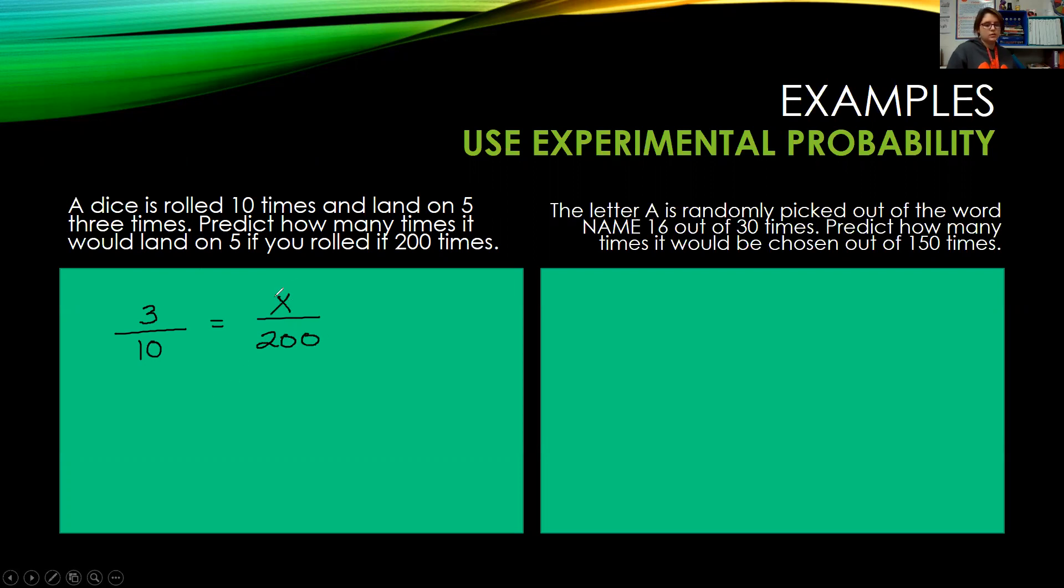And we want to know how many times it would land on 5 based on our smaller test. So again, this is a proportion. So we're going to cross multiply. So we have 10x equals 600, divide by 10, divide by 10, x would equal 60. So we would expect 60 out of the 200 trials would land on 5 based on the 10 times we've already rolled the dice.